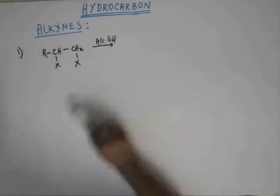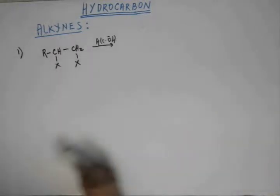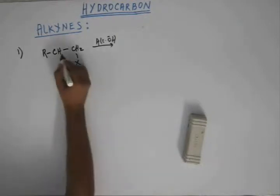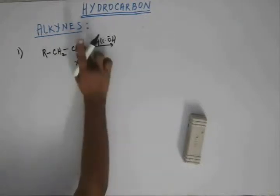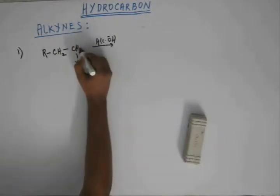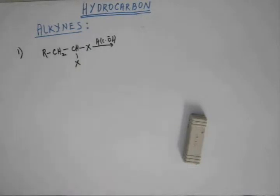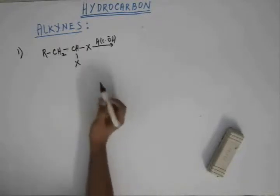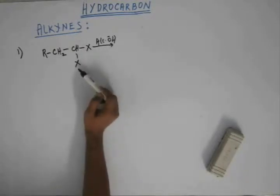We could have had the same product if instead of vicinal dihalide, we had gem dihalide — meaning both the halogens are on the same carbon. Gem dihalide would also yield the same product as in the last case, because if you carry out elimination, both the halogens are on the same carbon.